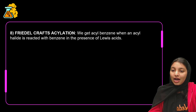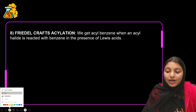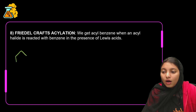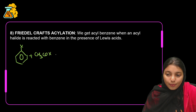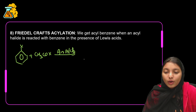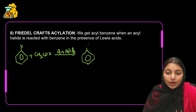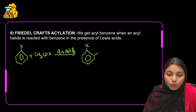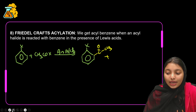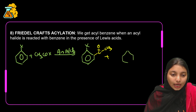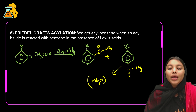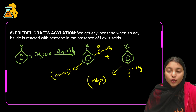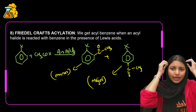Last and final one: Friedel-Crafts Acylation. We take aryl halide with CH3COX, treated again in presence of anhydrous aluminium chloride. We get ortho-para substituted acyl-substituted product COCH3. The acyl group adds at the para position as major product and ortho as minor product. This is how we have covered name reactions in this chapter.